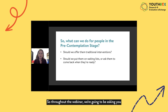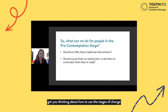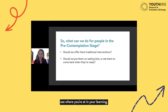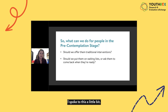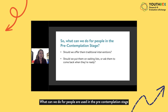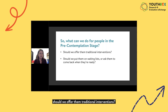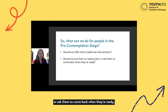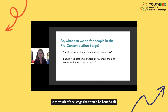Throughout the webinar, reflective questions are posed to get participants thinking about how to use the stages of change in their work. The first reflection questions ask: what can we do for youth in the pre-contemplation stage? Should we offer them traditional interventions? Should we put them back on waiting lists or ask them to come back when they're ready? What types of strategies have you used or might you use with youth in this stage?